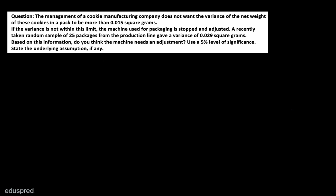I'm going to solve this question. The management of a cookie manufacturing company does not want the variance of the net weight of these cookies in a pack to be more than 0.015 square grams. If the variance is not within this limit, the machine used for packaging is stopped and adjusted. A recently taken random sample of 25 packages gave a variance of 0.029 square grams. Do you think the machine needs an adjustment? Use a 5% level of significance and state the underlying assumption if any.